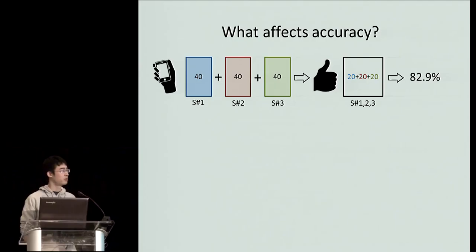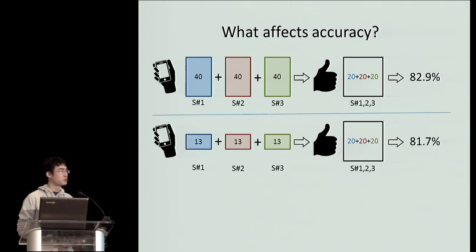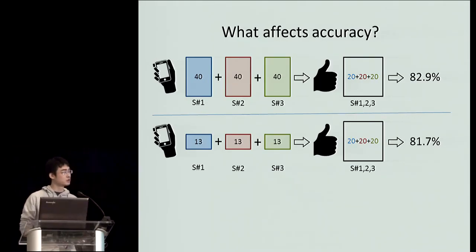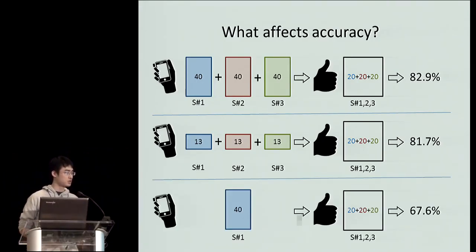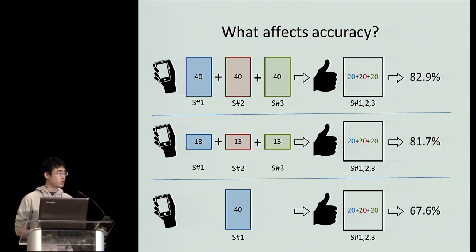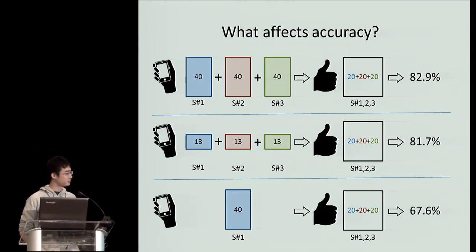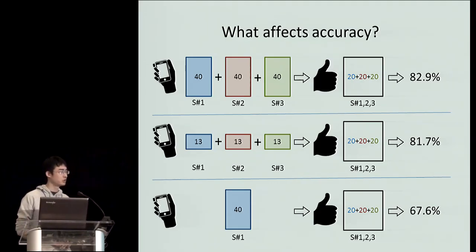The first figure represents results using all participants' training data to classify all test data. When we reduce the amount of training data to a third, accuracy drops by a bit, but perhaps not as much as one would expect, which may reflect the relative simplicity of the thumb gestures. However, if we restrict the sessions from which the training data comes, accuracy drops further to 67.6%. This suggests that one of the keys to ThumbsUp's accuracy is that training data needs to be gathered across different sessions and circumstances, highlighting one of the potential benefits of the dual-observable input approach — its ability to gather data across time and circumstances.